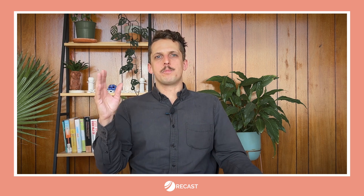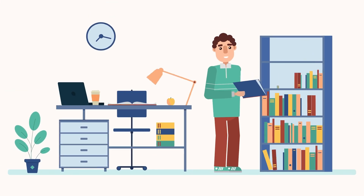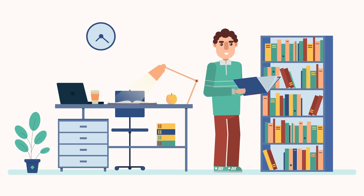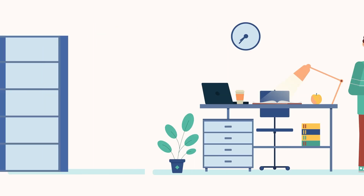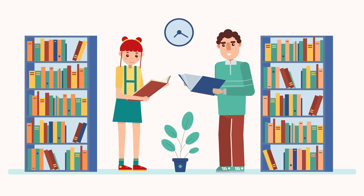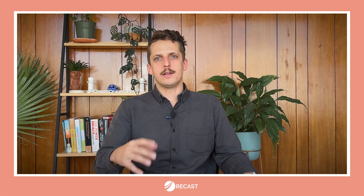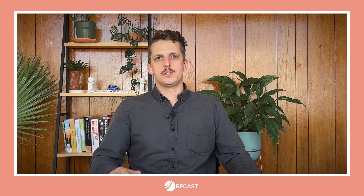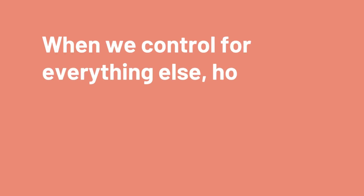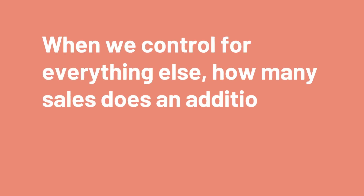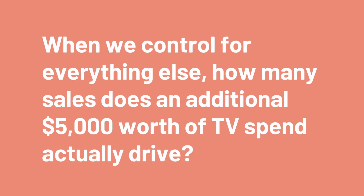There was simply no way to know if an ad impacted the purchase for any individual person. So how did CMOs measure advertising effectiveness back then? Well, they used the power of math and statistics. To measure advertising effectiveness, brands hired statisticians and econometricians to compile their data on marketing activity and sales and then use statistical models to find the patterns in the data. This allows them to answer questions like, when we control for everything else, how many sales does an additional $5,000 worth of TV spend actually drive?